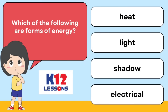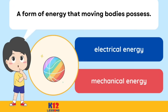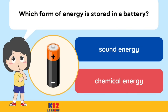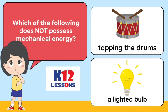Electrical. A form of energy that moving bodies possess: electrical energy or mechanical energy? Which form of energy is stored in a battery? Sound energy. Chemical energy. Which form of energy does not possess mechanical energy? Tapping the drums. A lighted bulb.